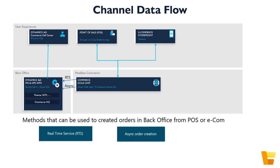For orders created in the point-of-sale or e-commerce channels, there is a distributed architecture critical to performance and reliability. Imagine thousands of stores and millions of online shoppers all trying to read and write transaction data from one shared database in real time — that would be a disaster. So those channels connect first to the Commerce Scale Unit, which has its own business logic and channel database. An organization may deploy multiple Commerce Scale Units depending on their size.